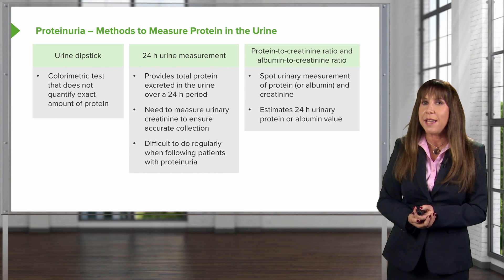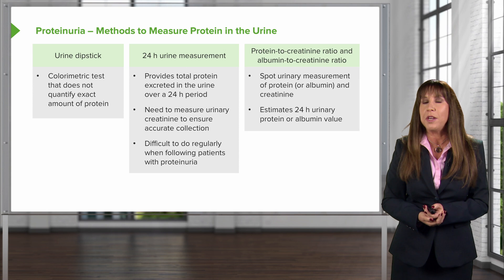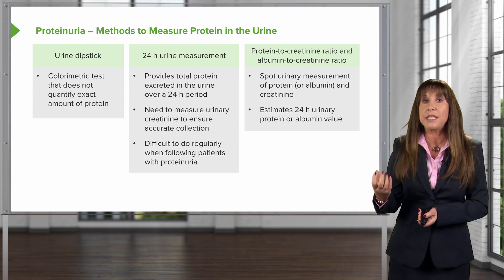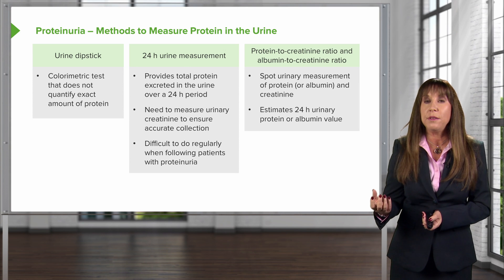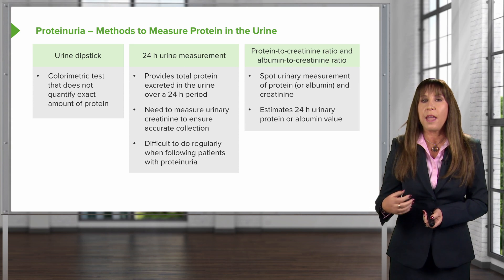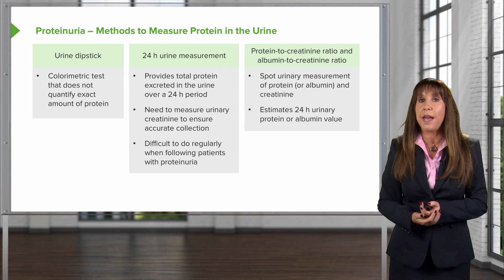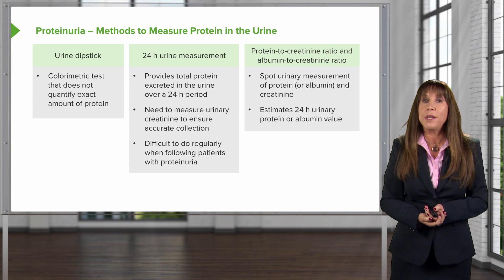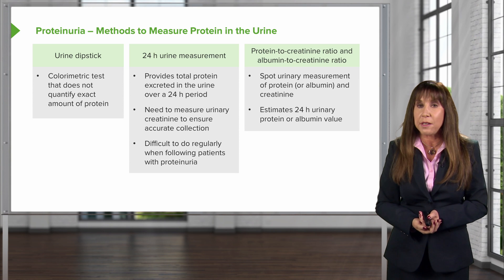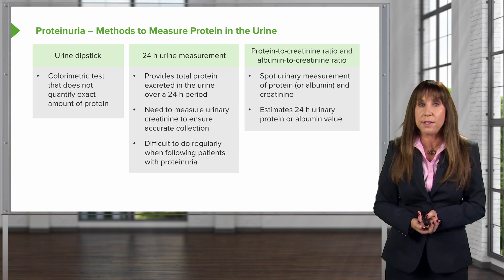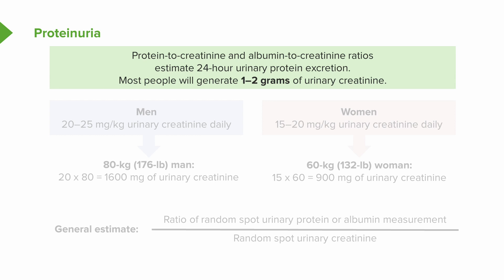We can use something called the protein-to-creatinine ratio or the albumin-to-creatinine ratio. This is a spot urinary measurement of protein or albumin measured relative to creatinine. It estimates a 24-hour urine protein or albumin value — what somebody excretes within a 24-hour period. Most people will generate between about one to two grams of urinary creatinine, and this is how we can use this ratio.